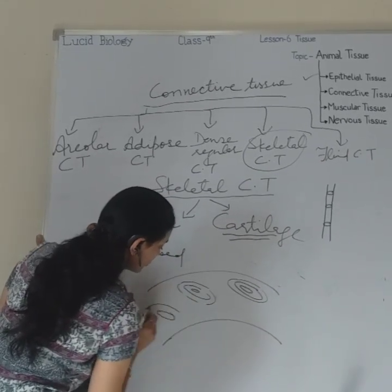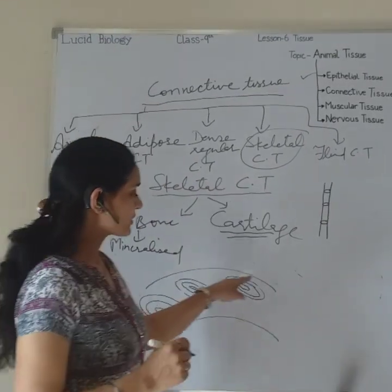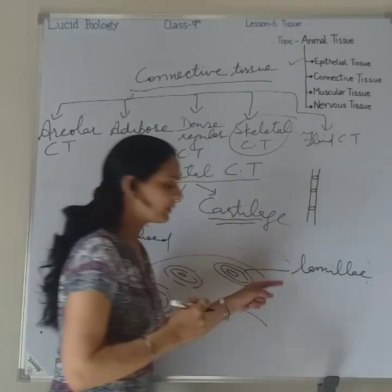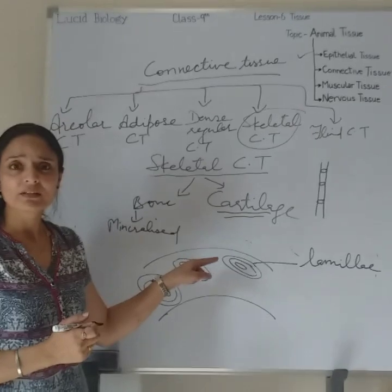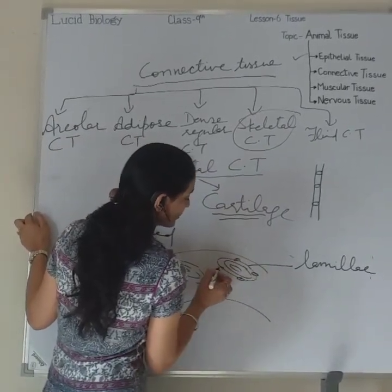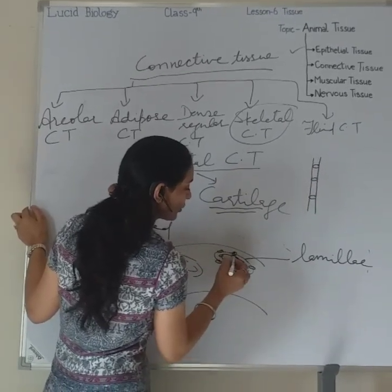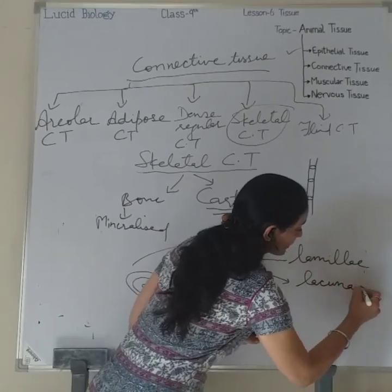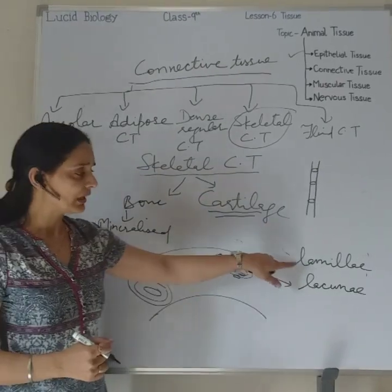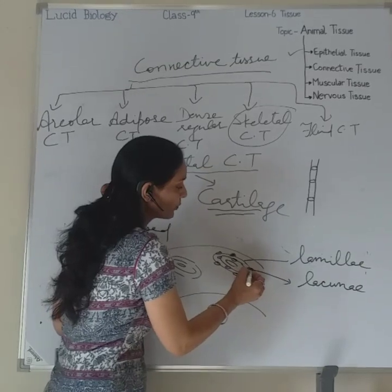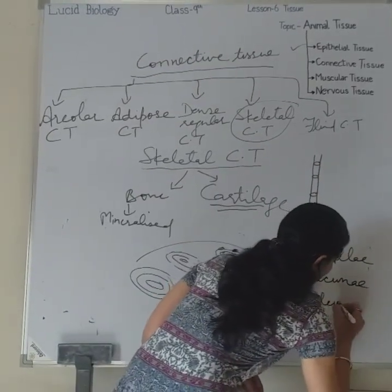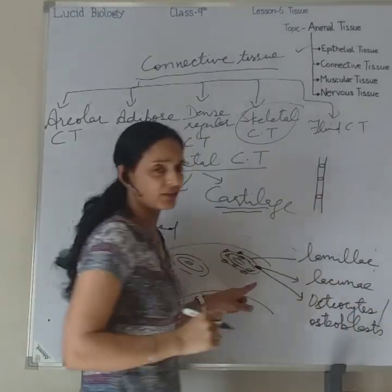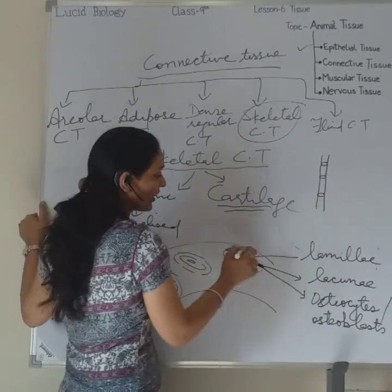These concentric rings are the matrix of bone, and this arrangement is called lamellae. In the lamellae, round structures are randomly distributed — these are fluid-filled spaces called lacunae, similar to what we saw in cartilage. Inside the lacunae there are bone cells called osteocytes or osteoblasts.